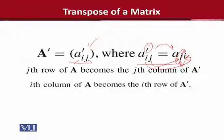So in array form, we can say that the transpose will exist in this way: i will become j and j will become i, where i and j respectively represent rows and columns.